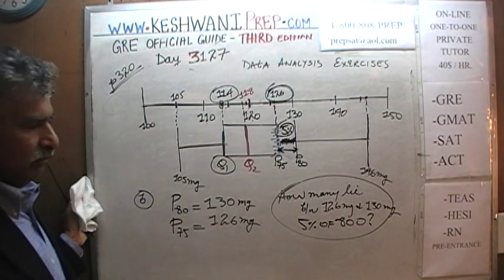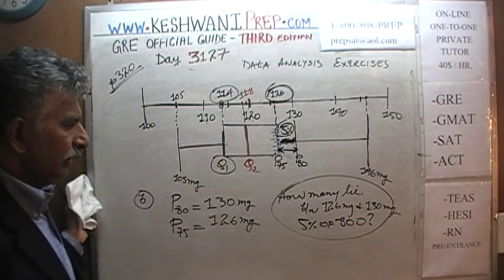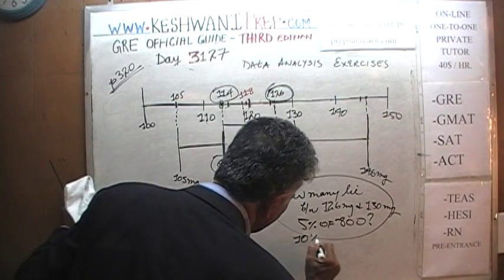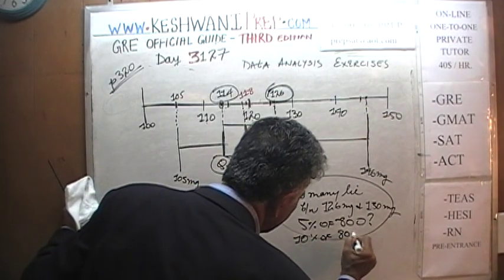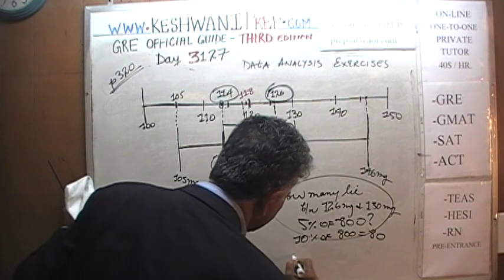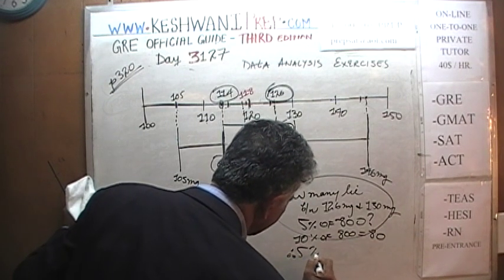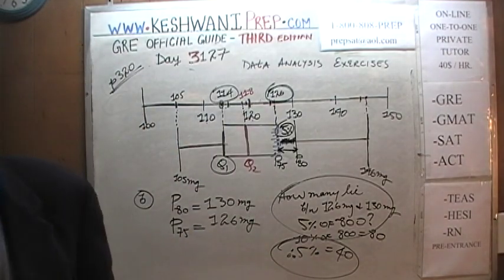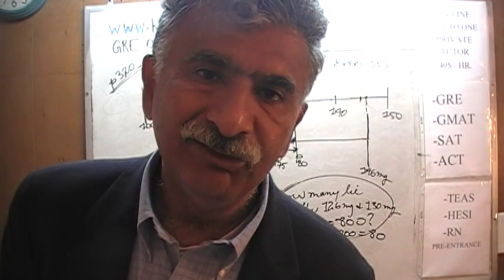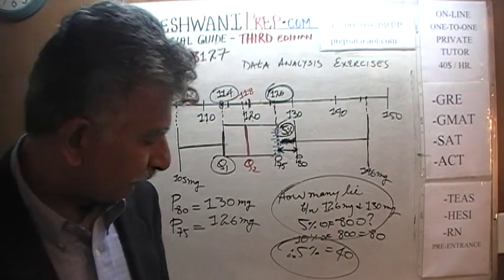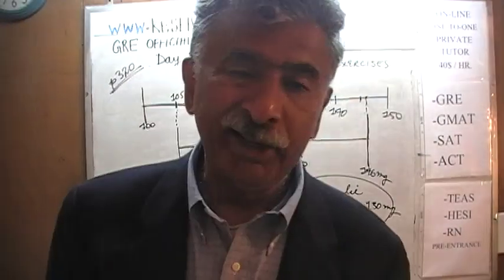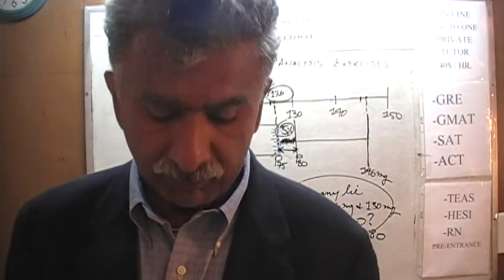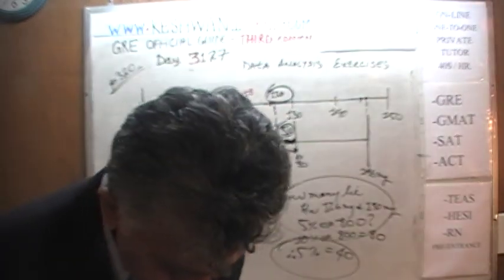10% of 800 is 80, therefore 5% is going to be 40. So 40 insects out of the 800 observed are going to weigh between 126 milligrams and 130 milligrams. And that was the end of that problem.